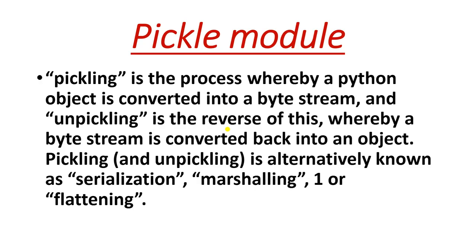Pickling is a process whereby a Python object is converted into a byte stream — everything you write in the system is stored in the form of bytes. This pickle module is applied only with binary files, not with text files. Unpickling is the reverse: a byte stream is converted back into an object. Pickling is also known as serialization, marshaling, or flattening — these are all alternative names for pickle.